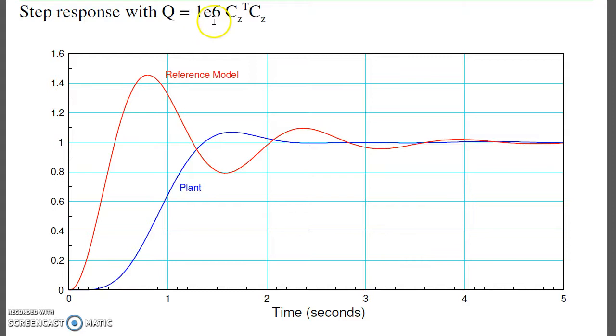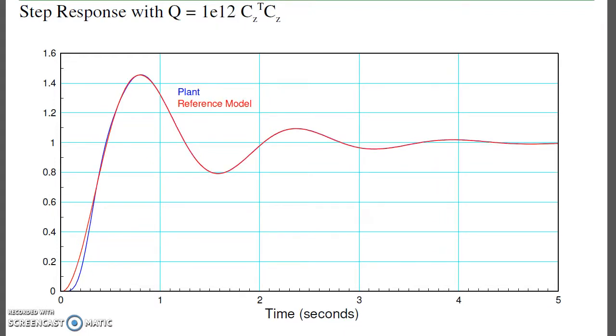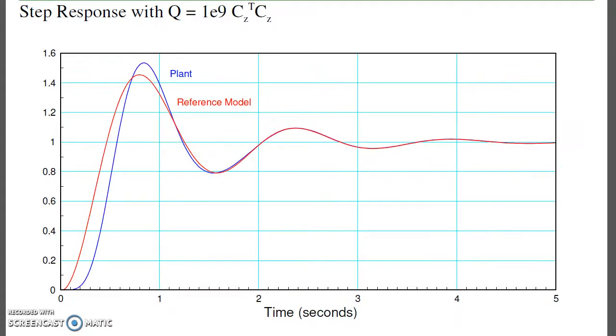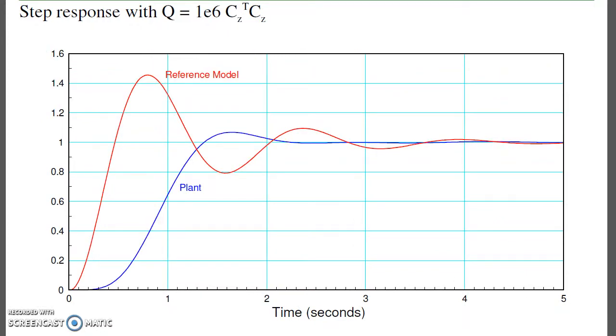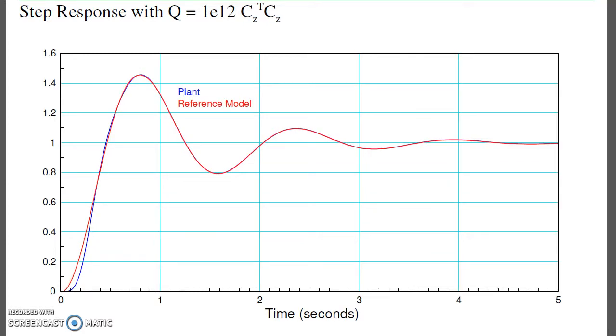If I want better tracking, I need to increase Q. So this is for weighting of 10 to the 6th. To increase the weighting to 10 to the 9th, I get closer tracking. Increase weighting to 10 to the 12th, it's almost dead on. Again, this is 10 to the 6th, 10 to the 9th, 10 to the 12th.